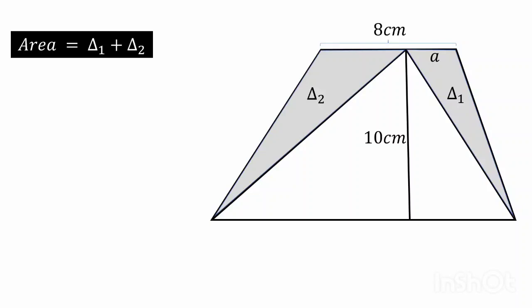So we can write the area del 1 is equal to half of a multiplied by 10. Simplify this and we will get del 1 is equal to 5a centimeter square.